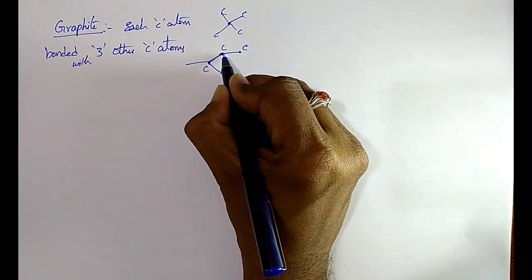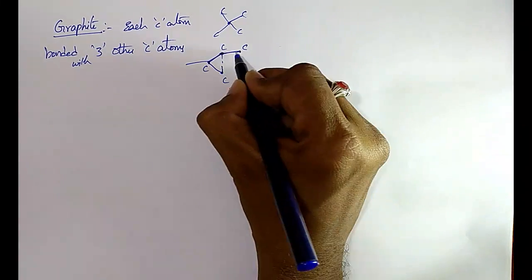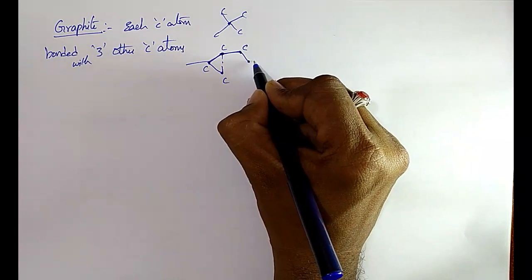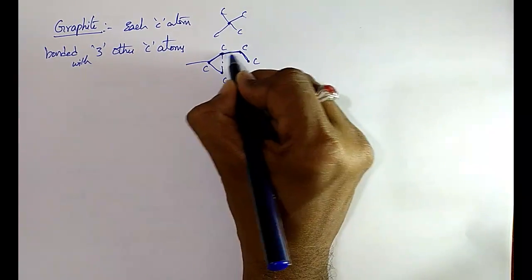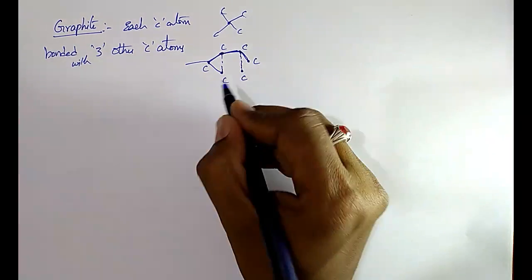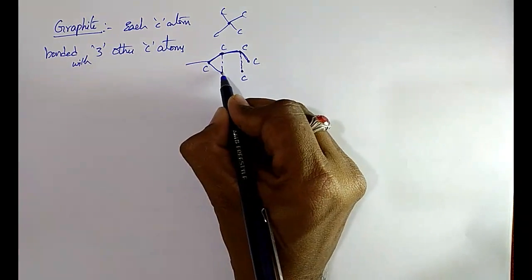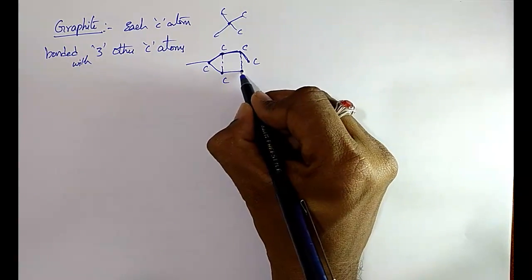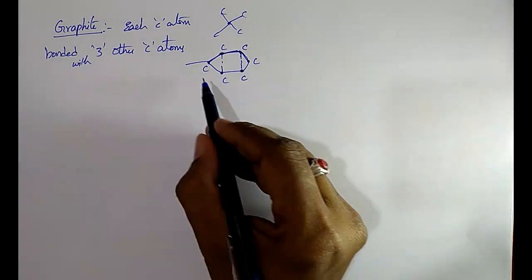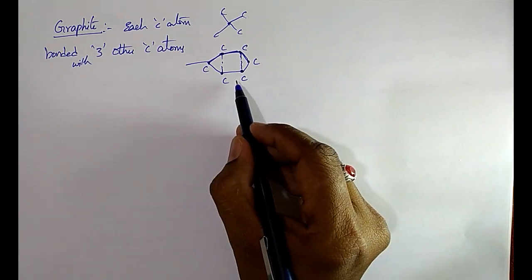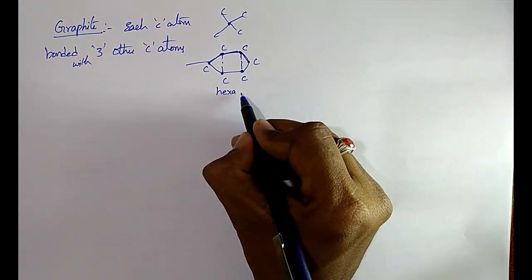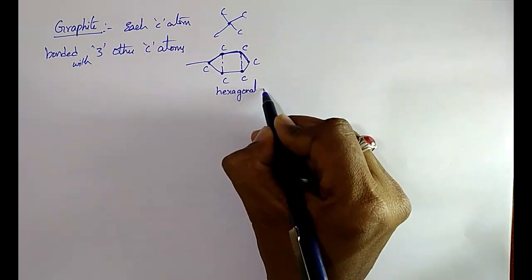Each carbon is bonded to 3 others: 1, 2, and 3. Similarly, for each carbon in the structure — 1, 2, and 3. In this way, graphite forms a hexagonal structure, also called a hexagonal array.